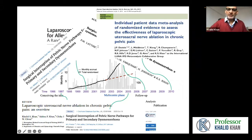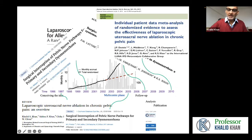But if the authors of the published study are also prepared to share the raw data they put into an Excel sheet or other database for conducting their own study, then that individual data or raw data can also be used to perform what is called an individual patient data meta-analysis.